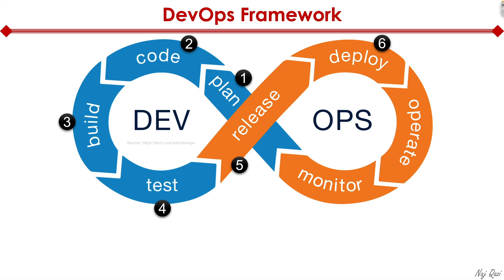From there, you deploy the code, and at that point the code is deployed into the production network. Then you operate the network and you monitor — you see whether the changes you introduced had a positive or negative impact. And as you can see, it's a continuous loop, a self-perpetuating continuous loop of changes.